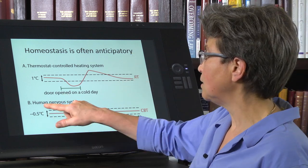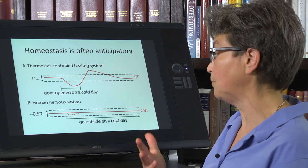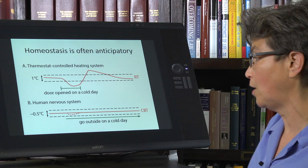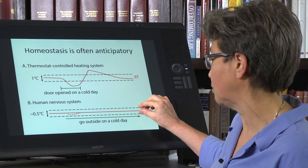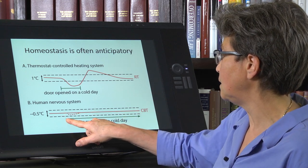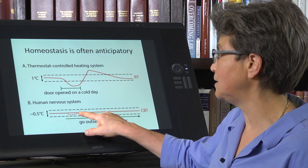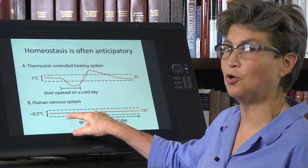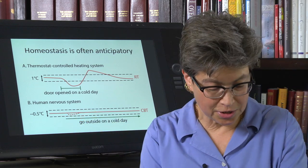In contrast, the human nervous system can keep, first of all, can keep the temperature well within a half a centigrade, even less than that. So we have a very tight control on our core body temperature. And if you go outside on a cold day, you never even deviate. This doesn't happen. The body temperature never changes.